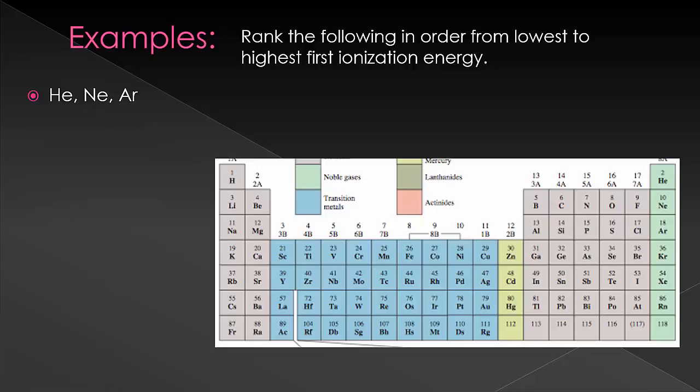Helium has the lowest number of electron shells, so those electrons are very close to the nucleus and they aren't shielded at all because there's no electrons in the middle. This means that it's going to be very difficult to remove that electron, so that means it has a high ionization energy. So we have argon and then neon and then helium.